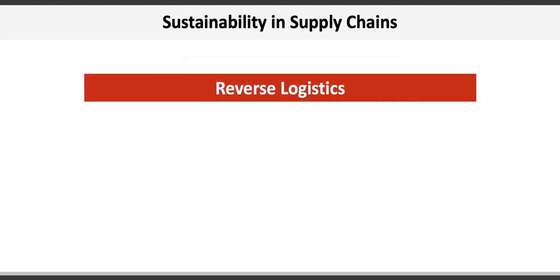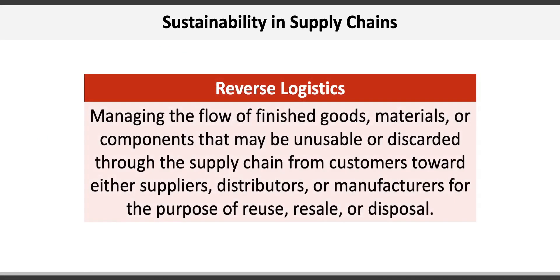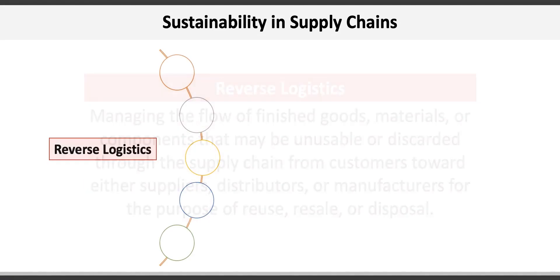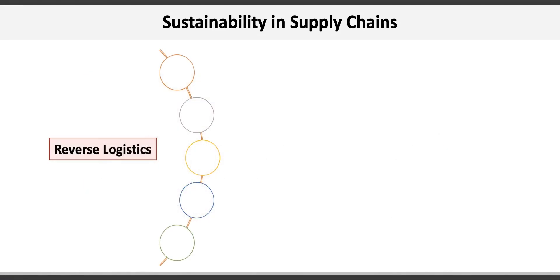Firms may also engage in reverse logistics, which is managing the flow of finished goods, materials, or components that may be unusable or discarded through the supply chain — from customers toward either suppliers, distributors, or manufacturers — for the purpose of reuse, resale, or disposal. Reverse logistics includes five key activities.